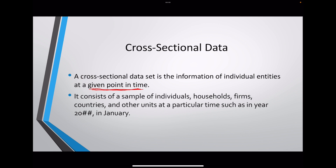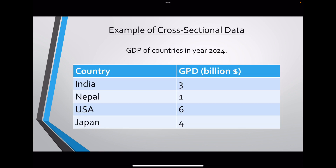It consists of a sample of individuals, households, firms, countries, and other units at a particular time — such as in a year, a month, or a particular time of day. For example, GDP of countries in the year 2024. Here the particular point in time is 2024, and the observations in the sample have data of that particular point in time. So the GDP of those countries in 2024 can be considered an example of cross-sectional data.